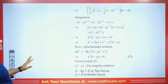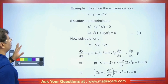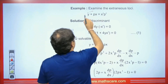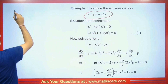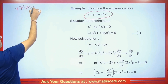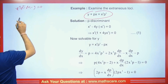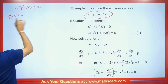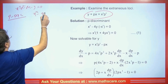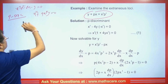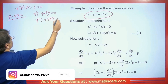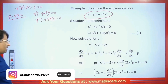Now let's try the next question: examine the extraneous loci for x⁴p² − px − y = 0. We find the P discriminant using b²−4ac: b = −x, so we get x² − 4 · x⁴ · (−y) = x²(1 + 4x²y) = 0. This is the P discriminant.